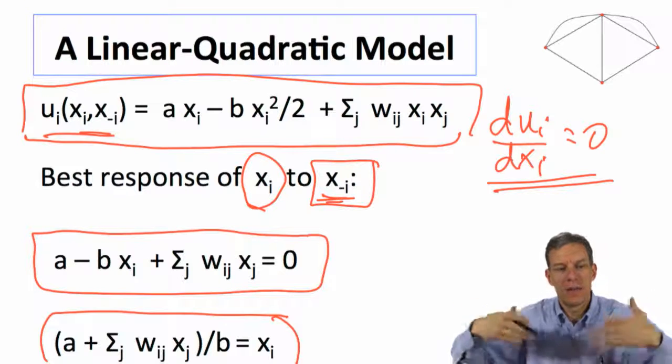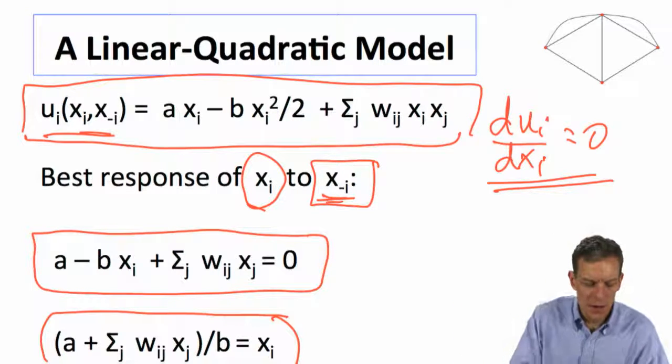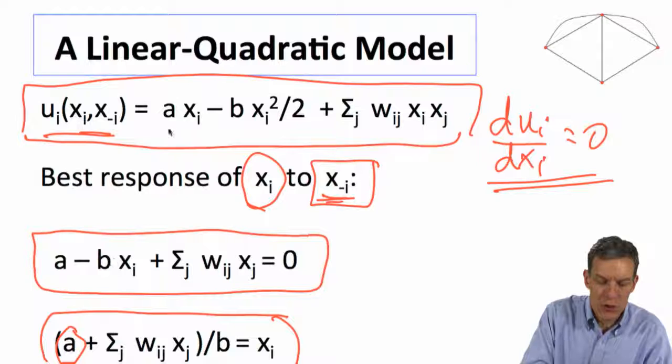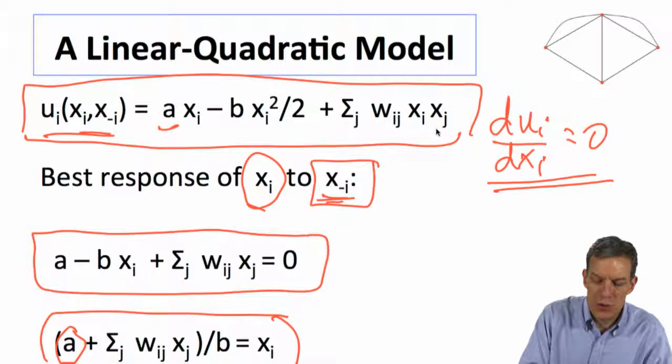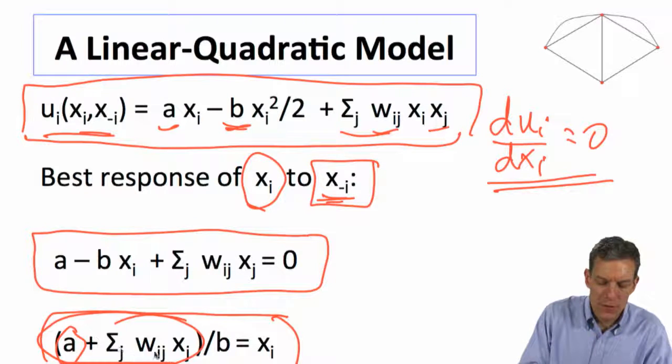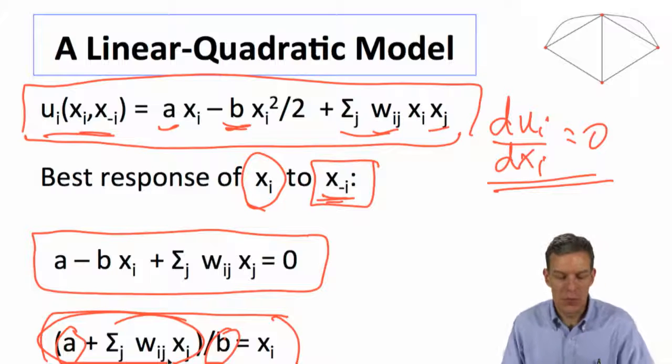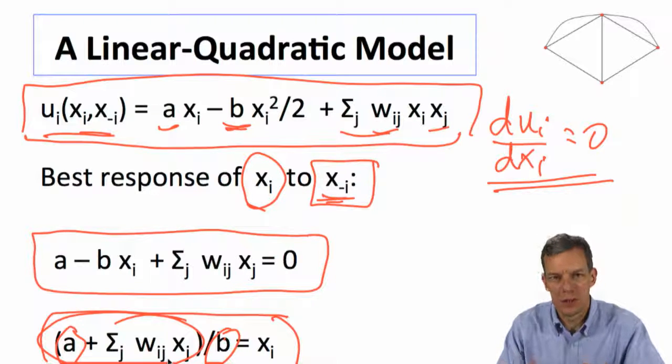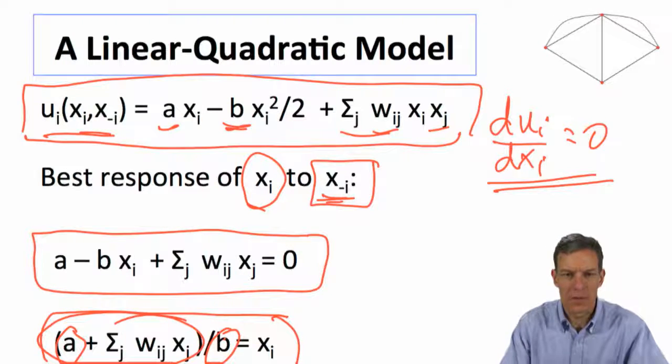So the more activity your neighbors take, the more you want to take. And so you're getting benefits that are proportional to a and benefits proportional to how much action your neighbors are taking, and then you're paying a cost relative to b. And so we get this benefits in the numerator over the cost, and that modulates exactly what the right xi is.